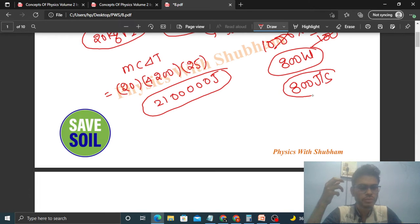So 800 watt, it means what? Means 800 joule per second. So we supply heat at the rate of 800 joule per second. So how much time will it take? So how much heat to supply? That is 21 into 10 to the power 5 joule. At what rate we supply? 800.